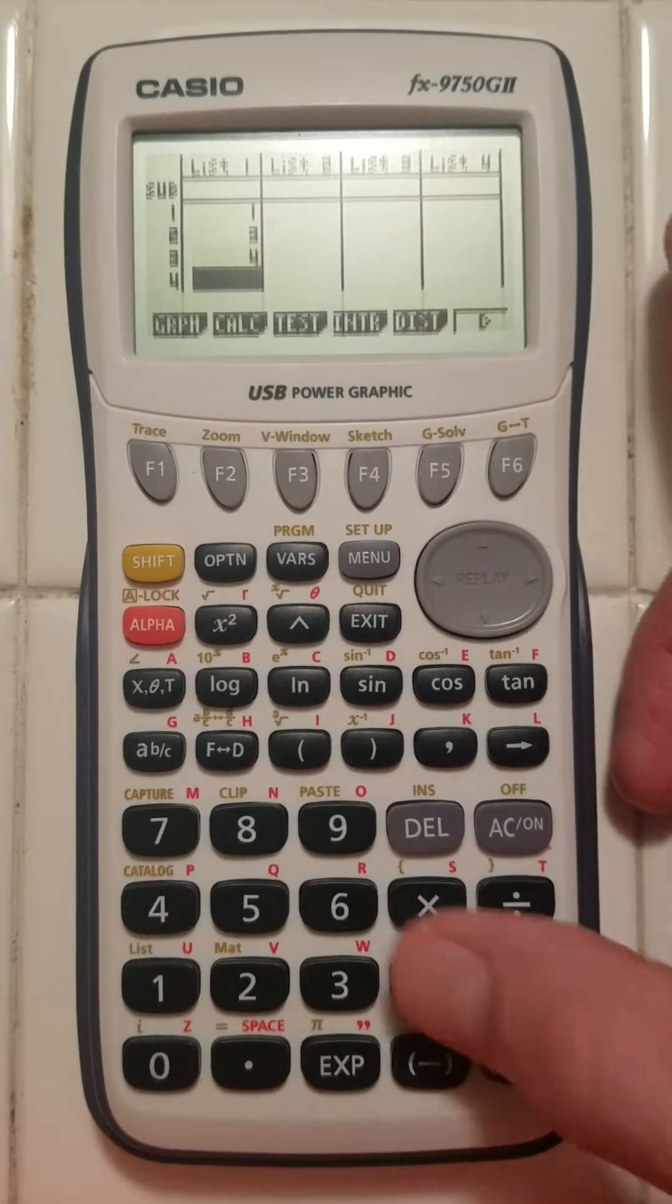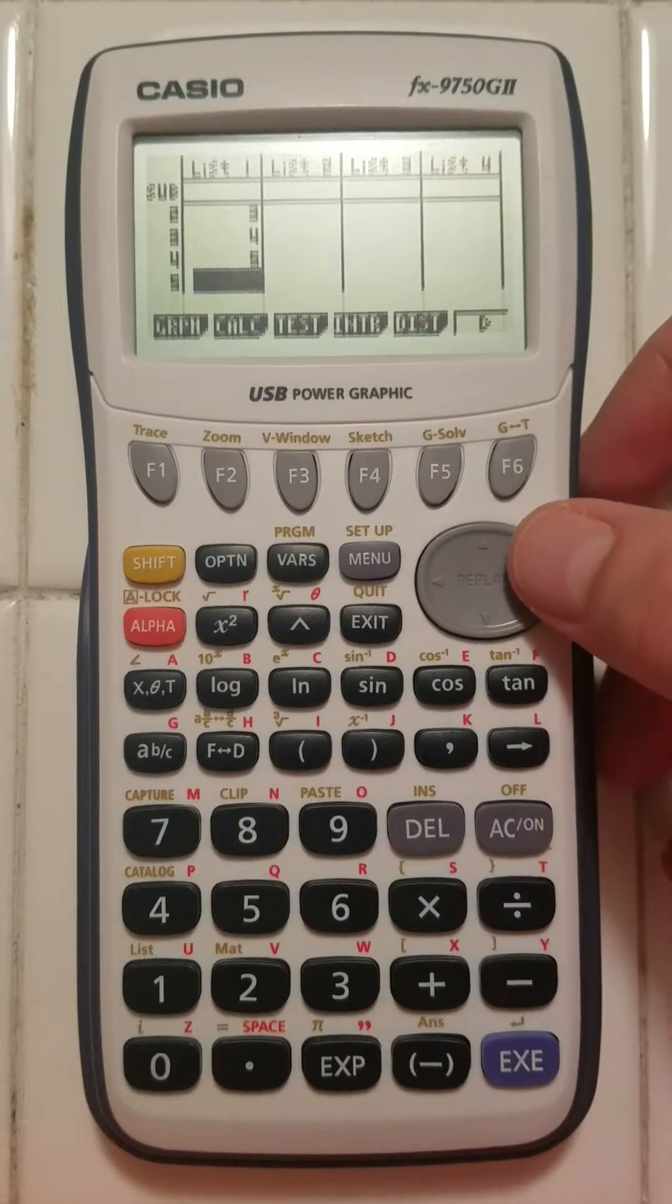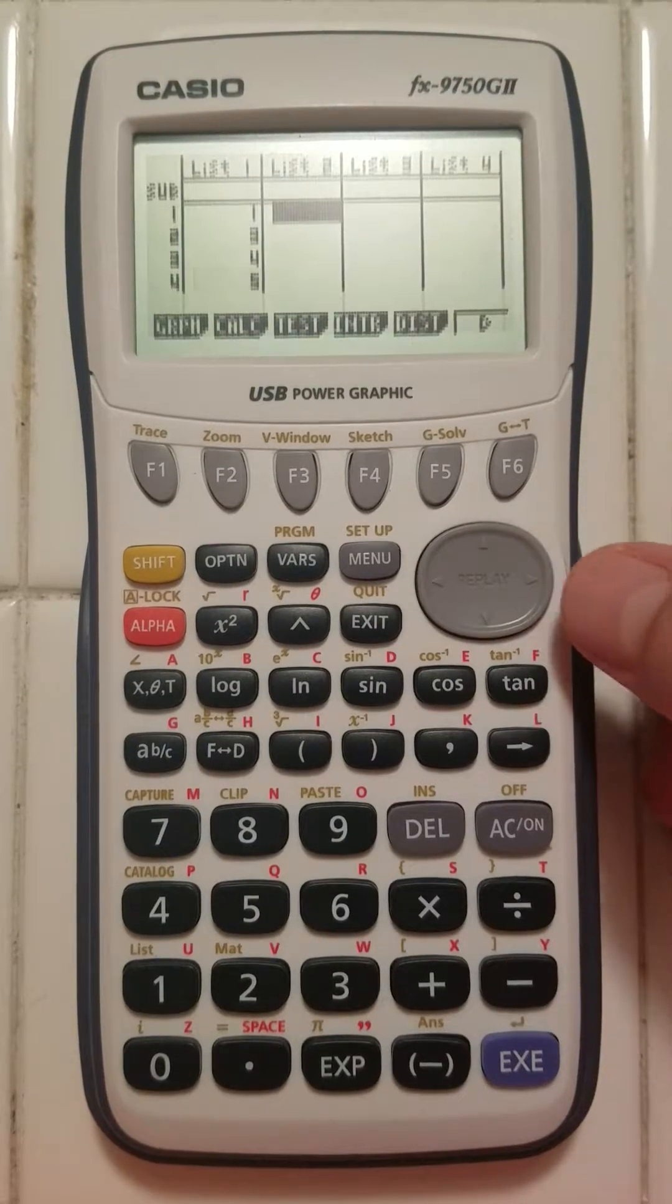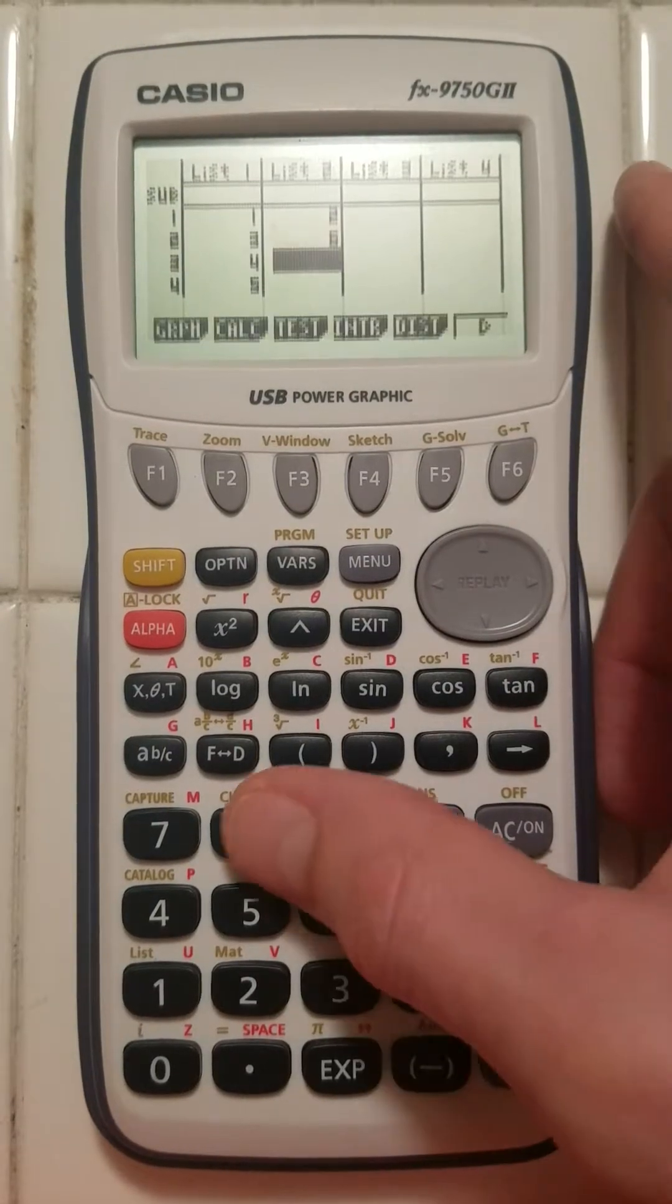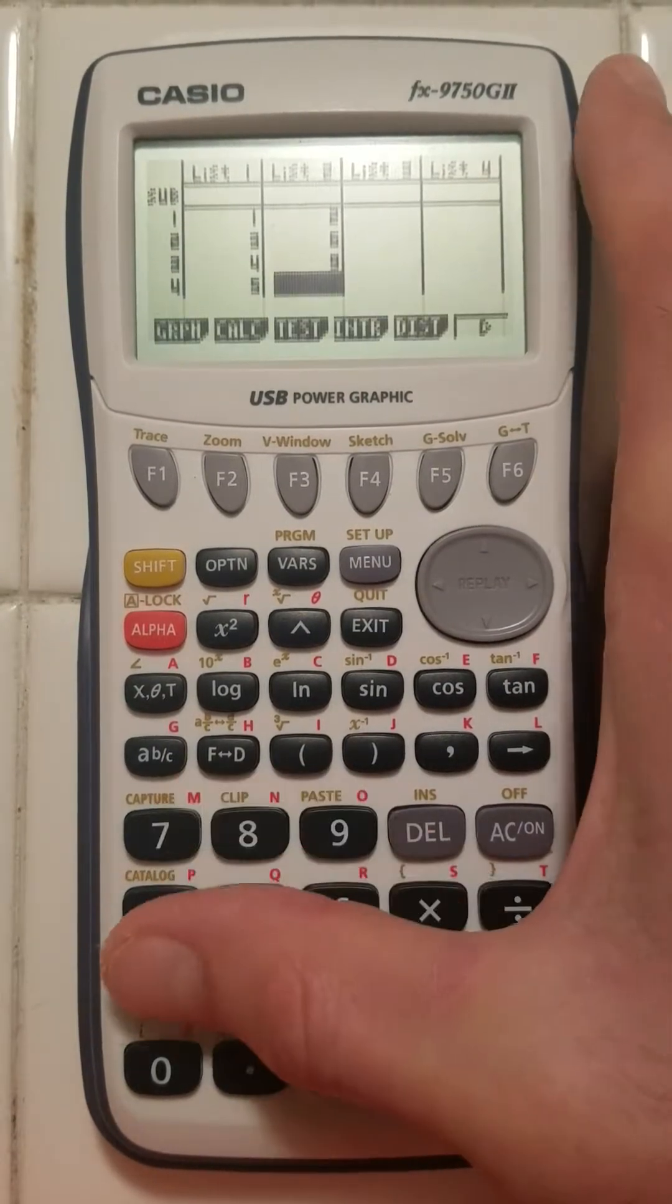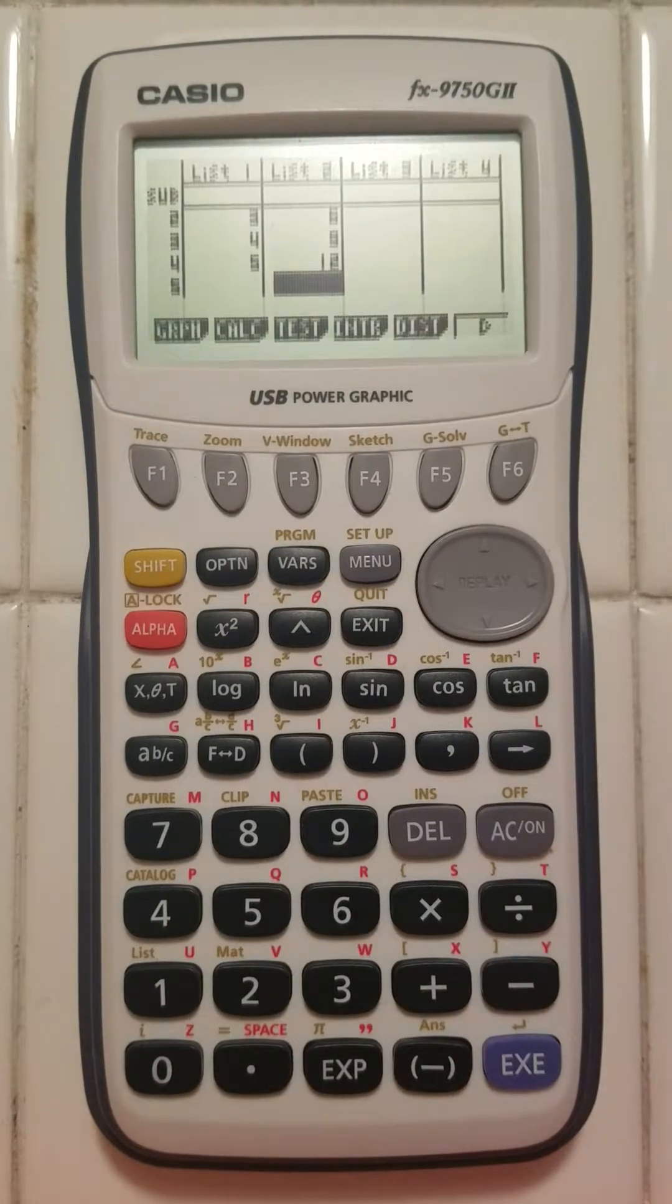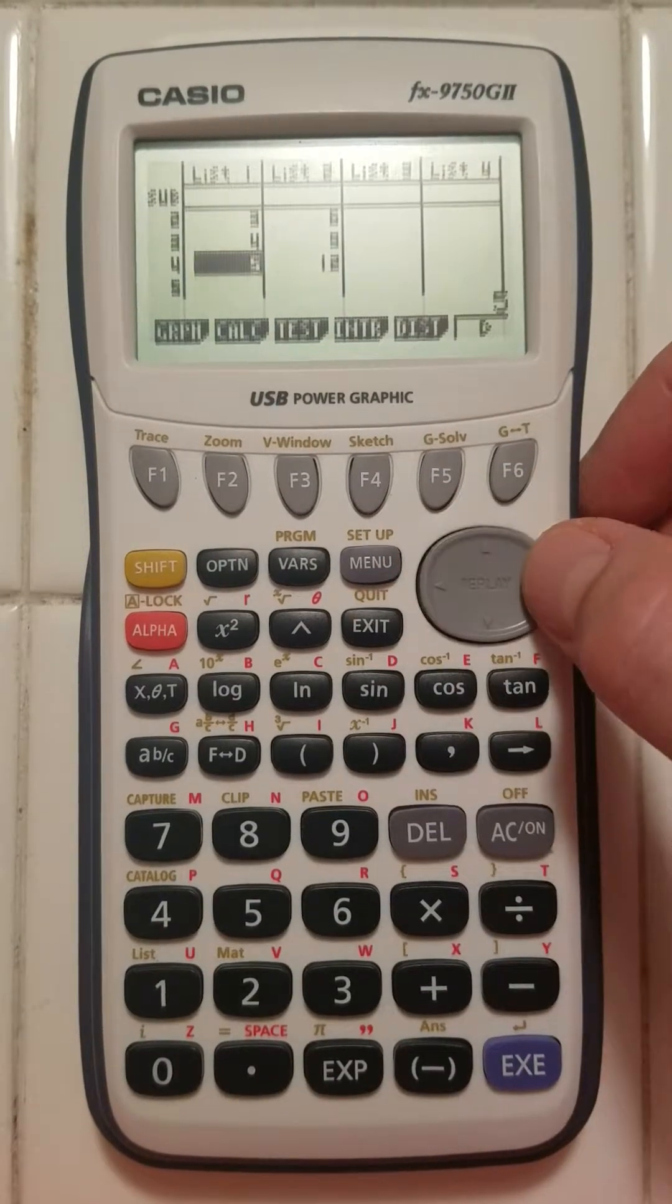I'll do this for four entries just to demonstrate. And now I'm going to press the right arrow to move to list 2, where I'll again enter my y values by typing in a number and pressing execute. Now you can see that I have four entries for both lists.